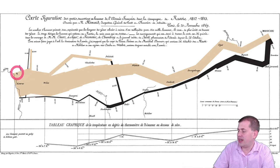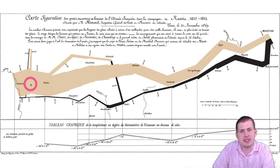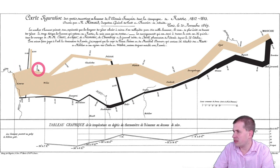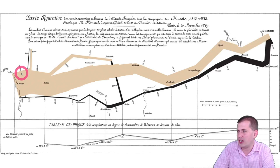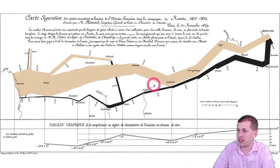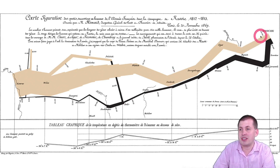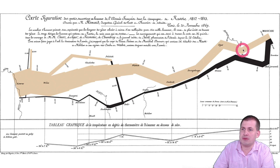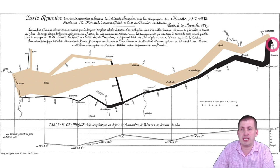The width of the brown and black areas represents how many people were in the army at the time. If you zoom in carefully you can see they started outside Vilnius with 422,000 soldiers. There were major battles at Smolensk and other places where numbers dropped significantly — down to 145,000 by Smolensk, and down to 110,000 by the time they finally reached Moscow. You can see the width starting very wide, and by the time they got to Moscow they had lost a huge number of people.